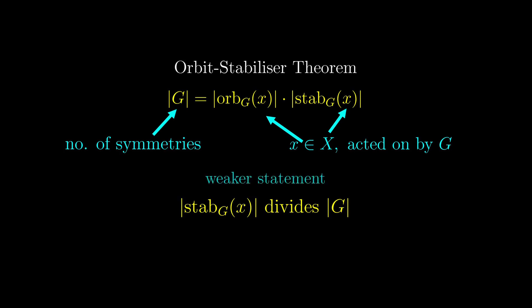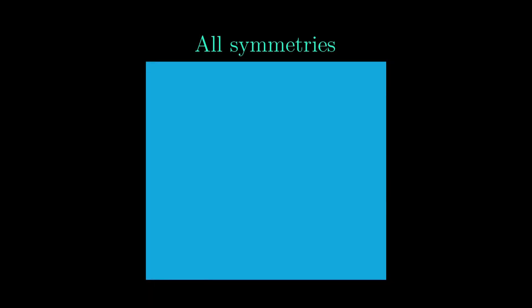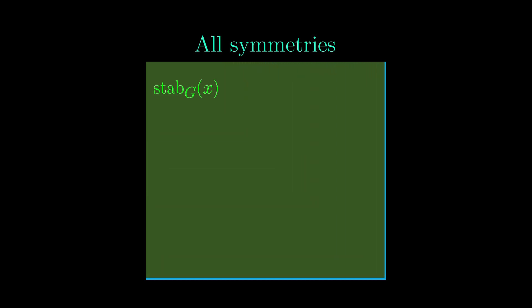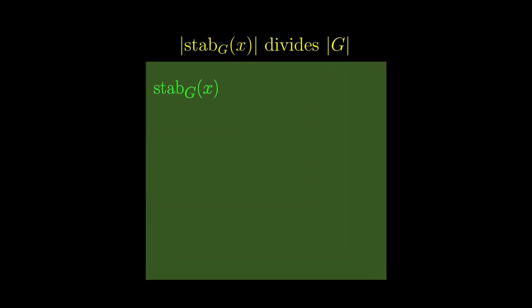This is a weaker statement in the sense that it does not tell you what the other factor is. Of course, the orbit stabiliser theorem is one way to prove this, but there is another way that directly explains this fact. We have this schematic diagram for the symmetries, and the whole rectangle here represents all the symmetries for a particular object. Let's say this bit here fixes x, and we have counted them. If all the symmetries fix x, then the statement that we want to prove is obvious, because the symmetry is the stabiliser.